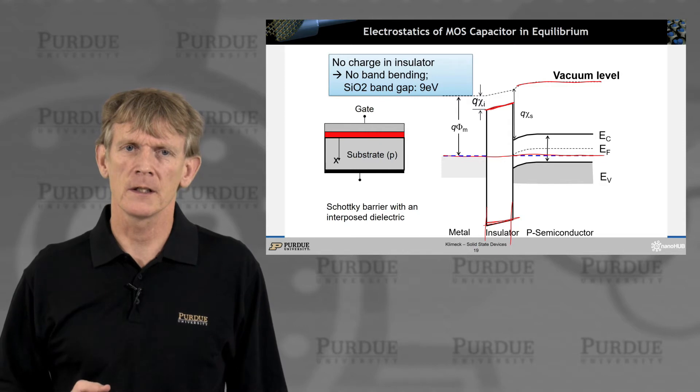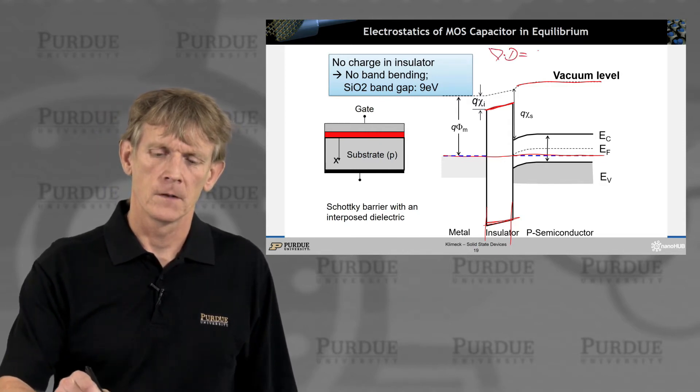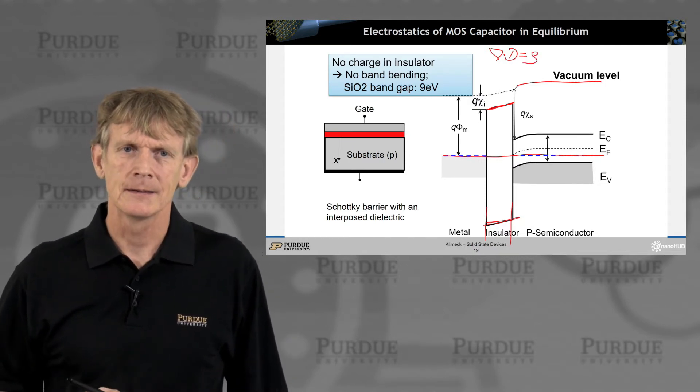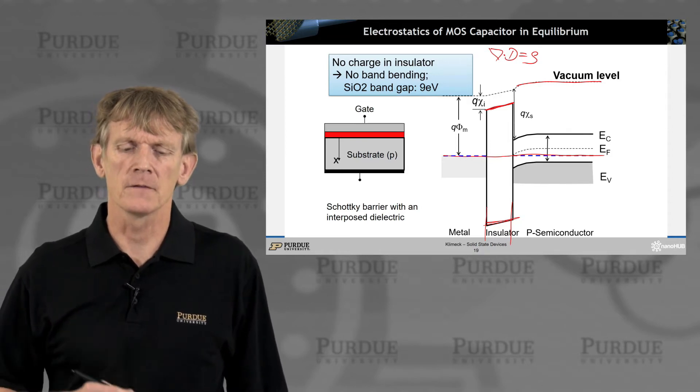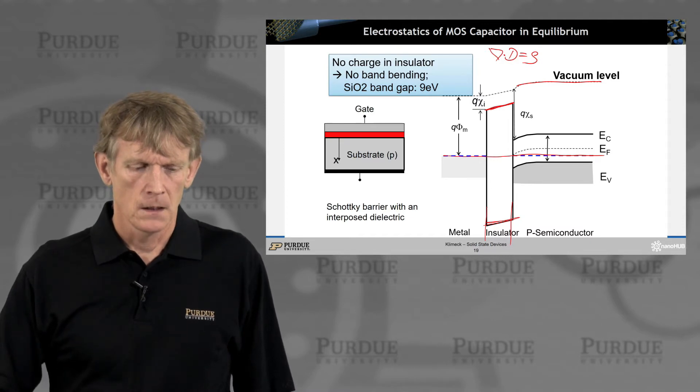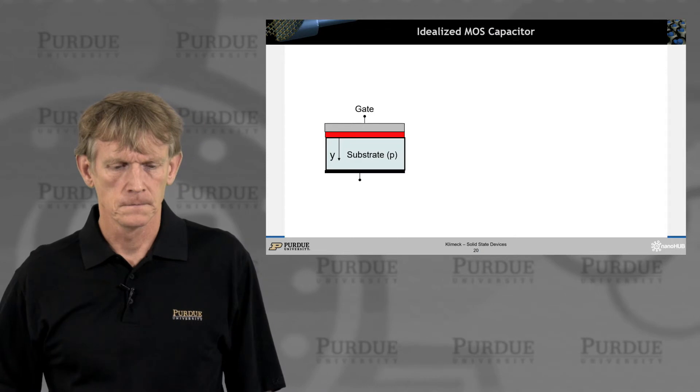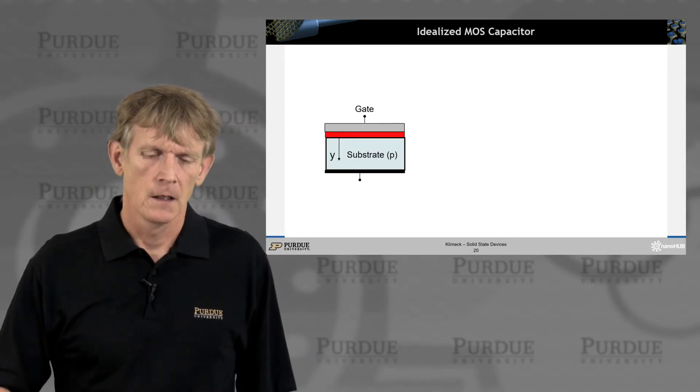Remember, Poisson equation, right? ∇·E = ρ/ε, right? And if there is no ρ, there is no change of the gradient.